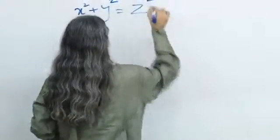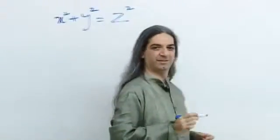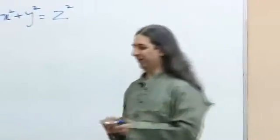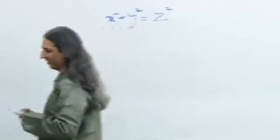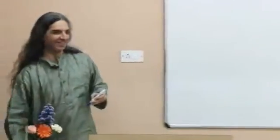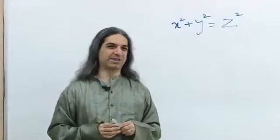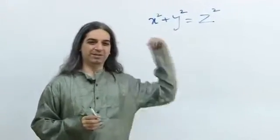X squared plus Y squared equals Z squared. 3, 4, 5 — you also get a chocolate! 30, 40, 50 would work too, or even 6, 8, 10 — you just multiply. So 3-4-5, 6-8-10, 5-12-13 — there are so many solutions.